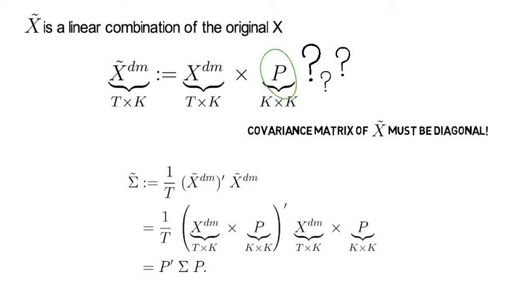So let's write that down. We want sigma tilde to be 1 divided by T, X tilde dm transpose times X tilde dm. Now X tilde dm is nothing else than X^dm times the rotation matrix P, which gives us the following expression, and we can now rewrite that as P transpose times sigma times P.